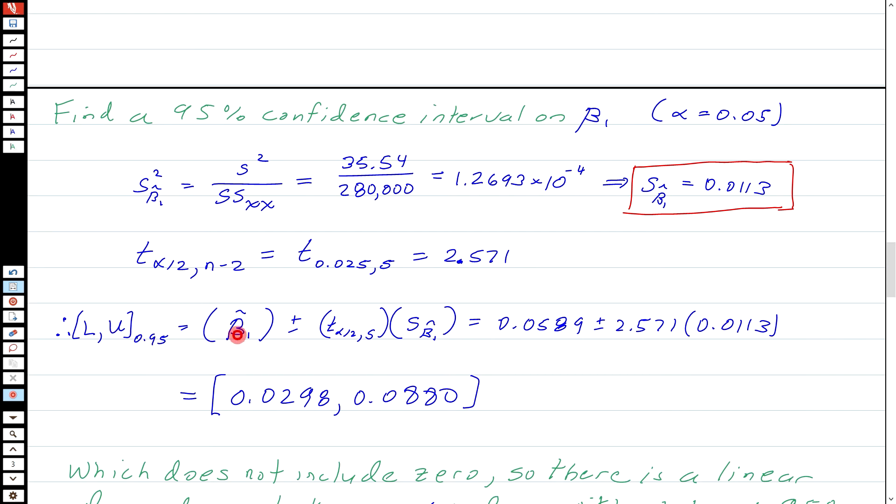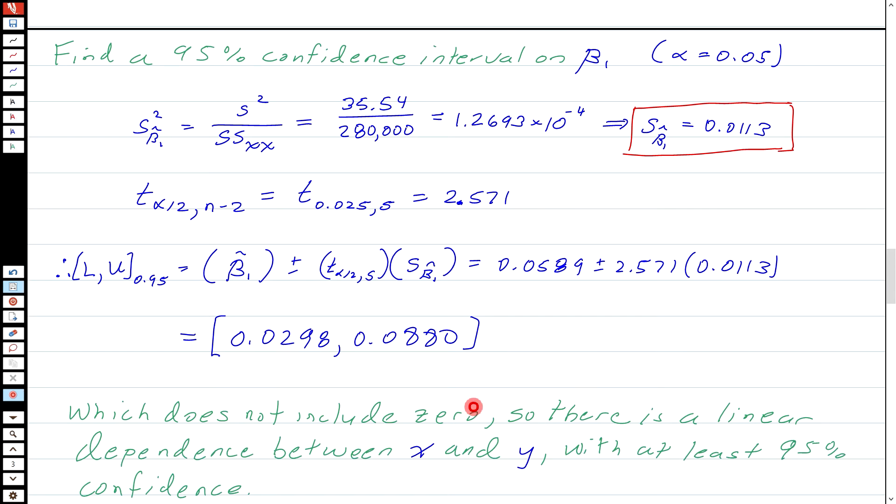And so I think I've got everything I need to know to compute the confidence interval. So L, U is equal to something plus or minus something times something. And now we just plug in the bits and pieces. This one is the estimate of beta 1, and that's beta 1 hat. This is T alpha by 2 because it's two-sided with n minus 2 degrees of freedom. We just computed that, 2.571. And this is the sample standard deviation of beta 1 hat. So I know everything here. I just plug in the numbers, and I get a 95% confidence interval from 0.0298 to 0.0880. This does not include zero, so there's a significant linear dependence between X and Y. And we can say, basically, we're 95% confidence that there is a linear dependence between X and Y.